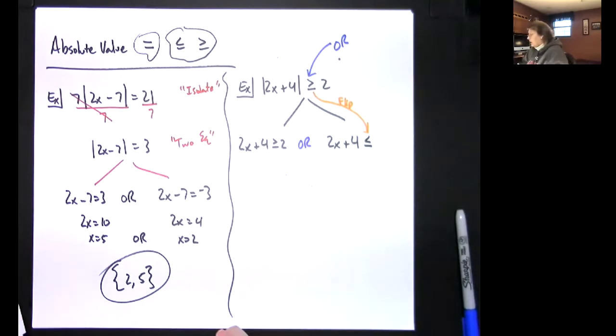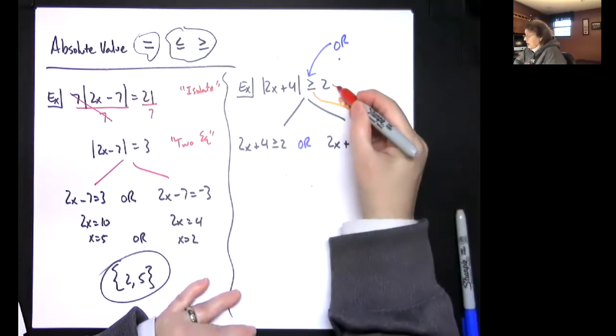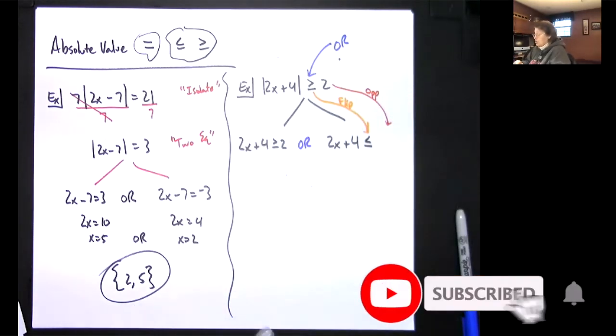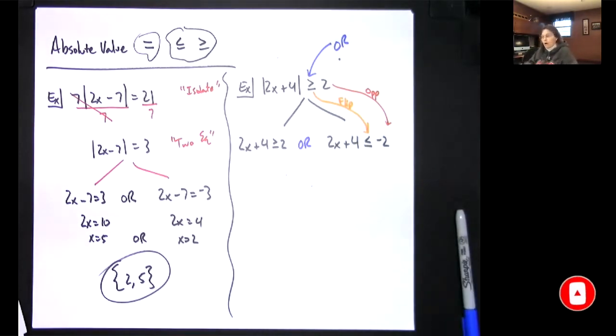And then after we did that, we did the opposite then of the 2, which would make it a negative 2. So we just had lots of things that you had to remember on that one to get that set up. But again, two answers.